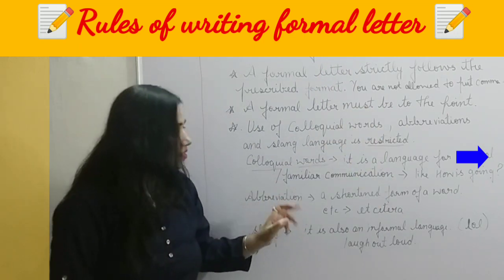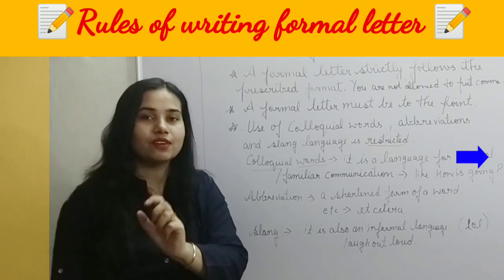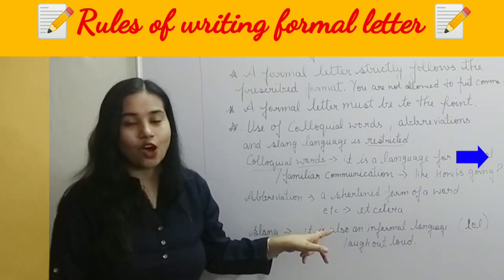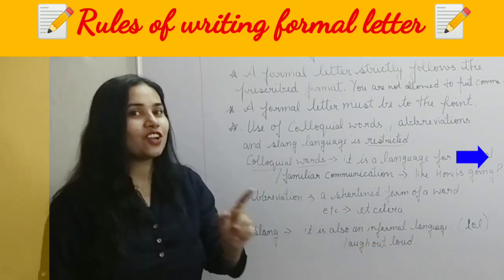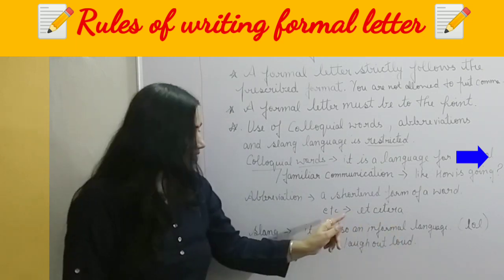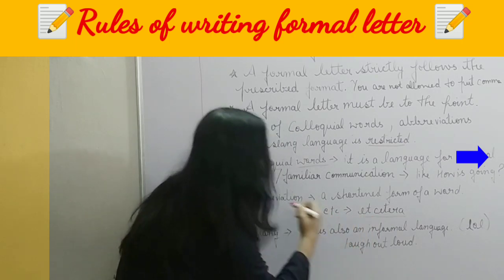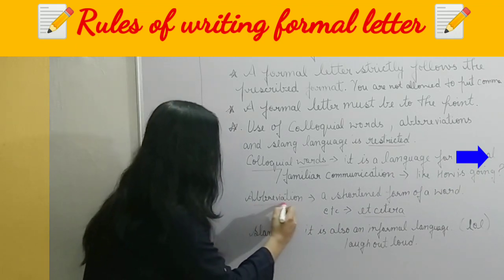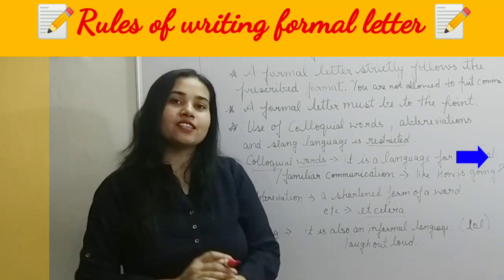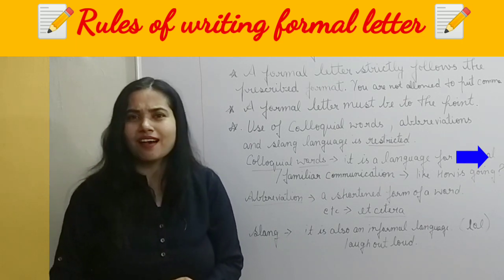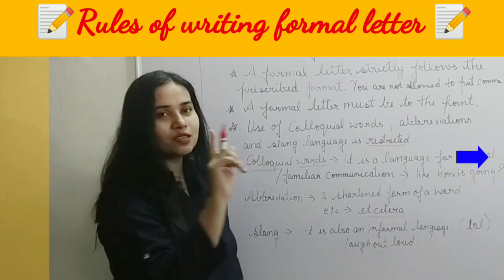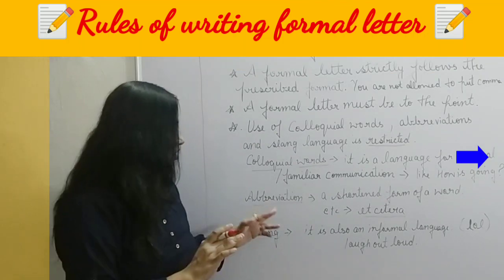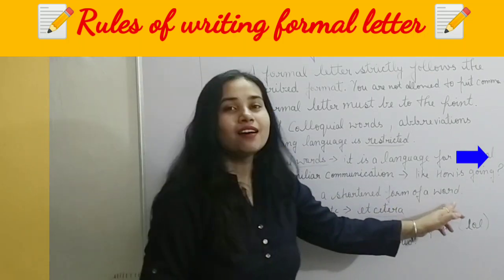What is abbreviation? A shortened form of a word. For example, 'etc.' — the full form is 'et cetera.' We are not allowed to use abbreviations. Suppose you write 'I am RG' — what is RG? That is wrong. You should write 'I am Rhea Gupta.' You are not allowed to use a shortened form of a word.